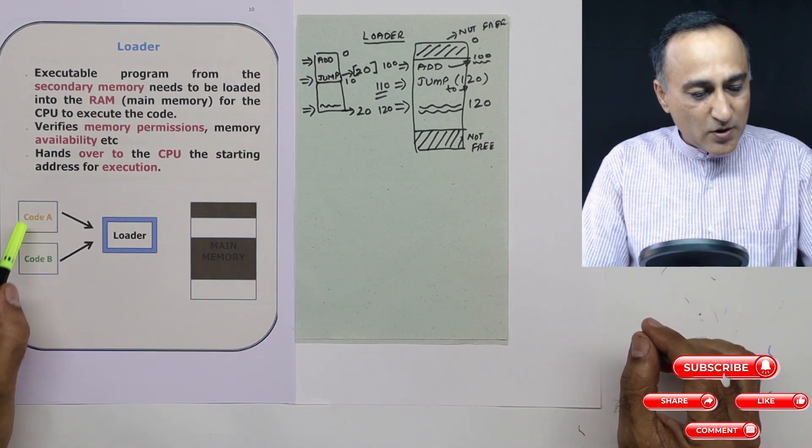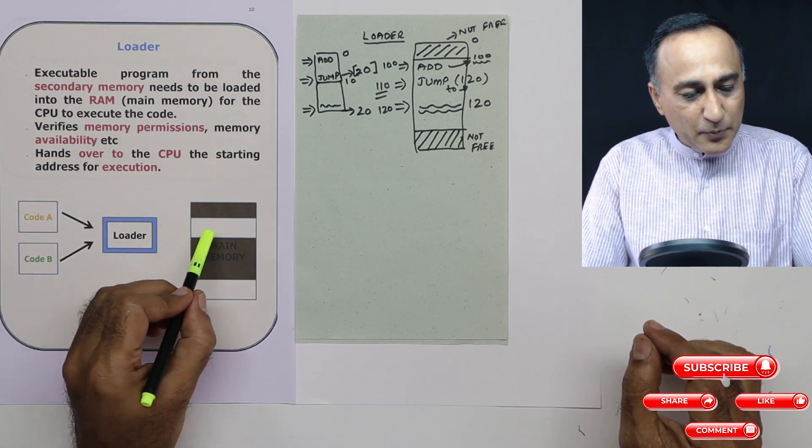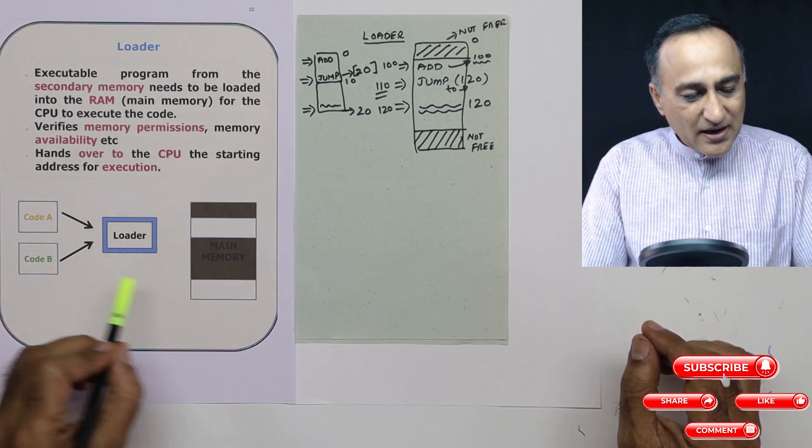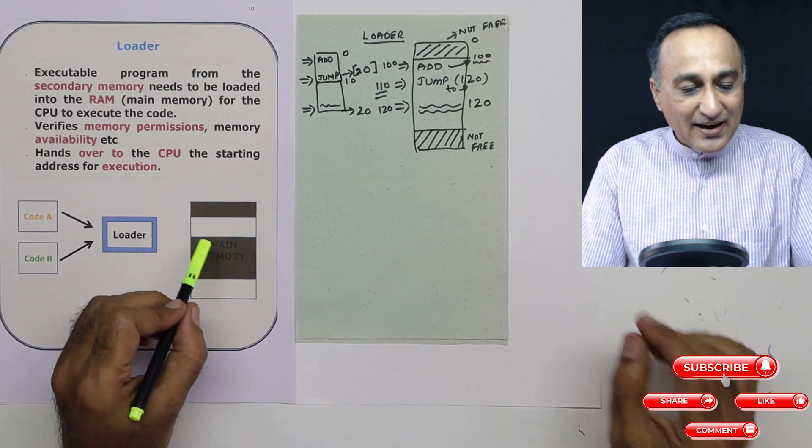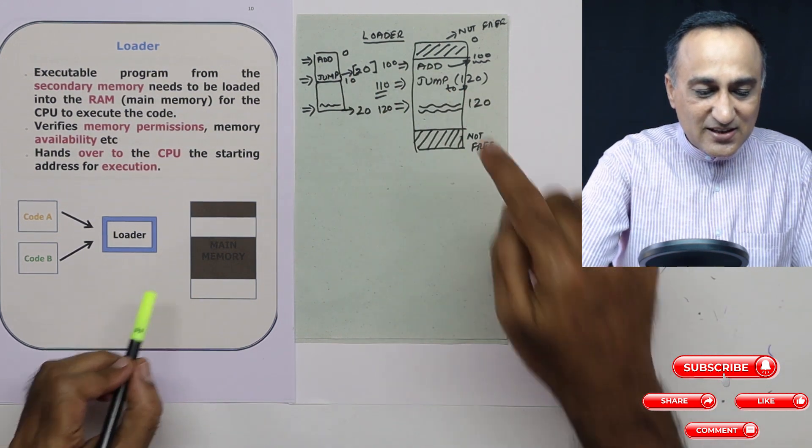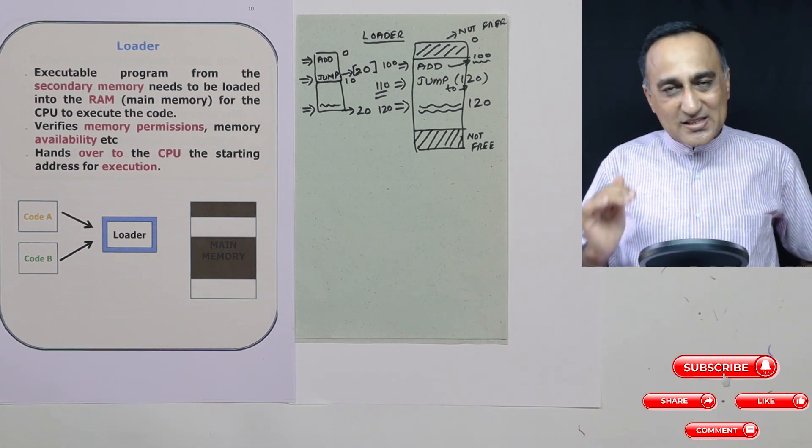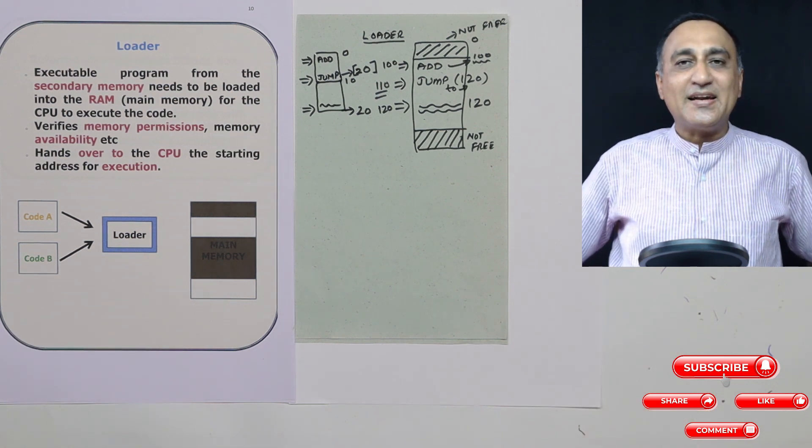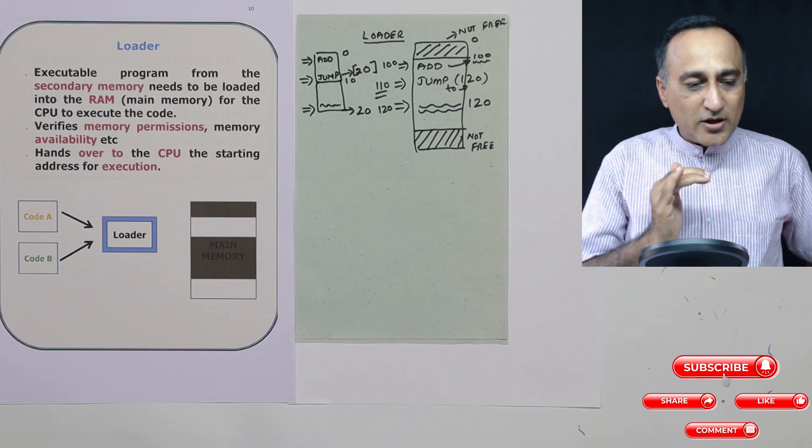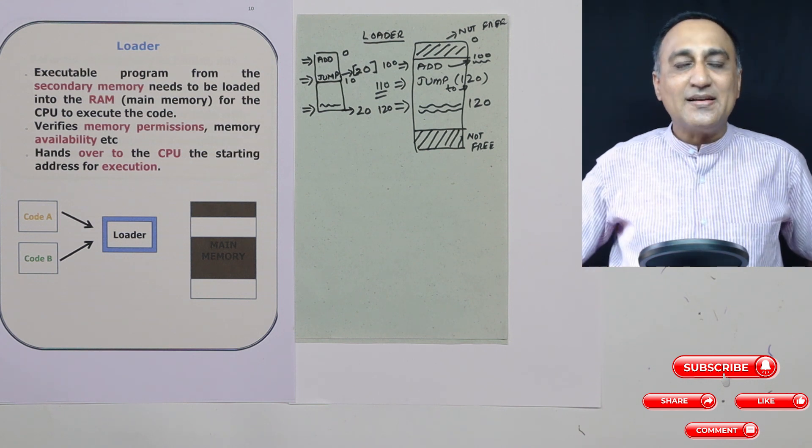So suppose you have code A and code B, it could take code A and put it here, it could take code B and put it here. And the address adjustment just as it did here, it will do here and here also. That is the job of the loader. So with this, I hope your concept of a linker and loader is clear. The loader is not so important, but understanding linker is important.